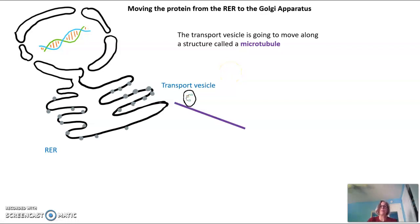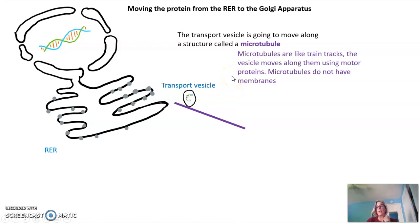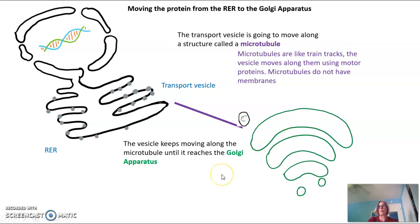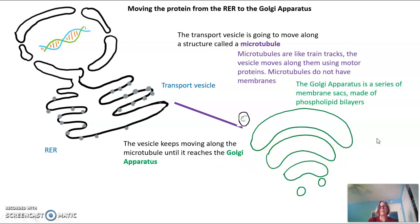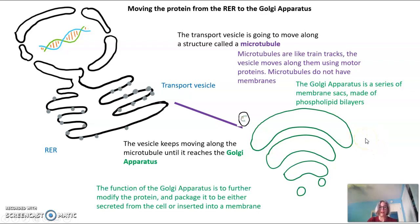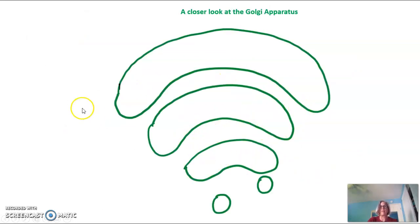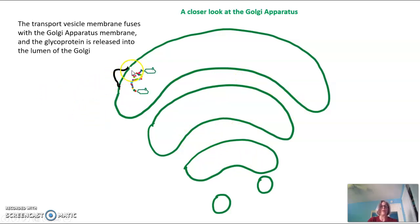The transport vesicle doesn't just float around the cell. It moves along a structure called a microtubule, which is part of the cytoskeleton and acts like a train track. The vesicle uses a motor protein to walk along the microtubule. Microtubules themselves have no membranes. The transport vesicle moves along the microtubule until it reaches the Golgi apparatus — a series of membrane sacs made of phospholipid bilayers — and fuses with it, releasing the glycoprotein into the Golgi lumen.